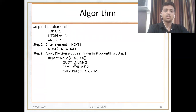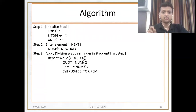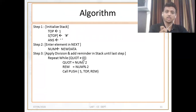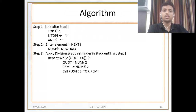Repeat this step until the quotient is not equal to 0. Quotient is equal to number divided by 2. Remainder is equal to number mod 2. See at the last step you get 1 mod 2 equal to 1. After that if you divide the quotient 1 by 2 it becomes 0 — meaning the quotient becomes 0.